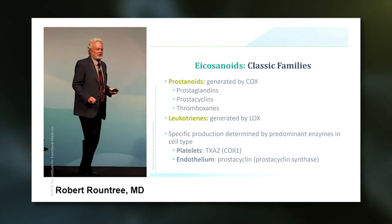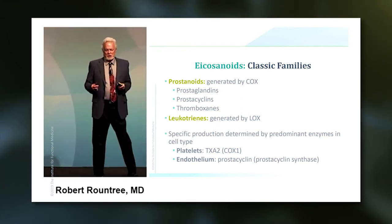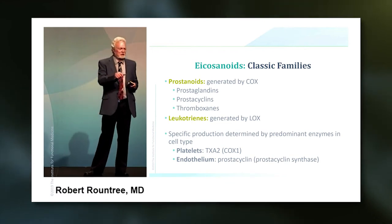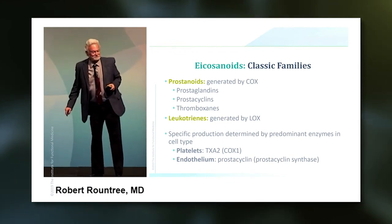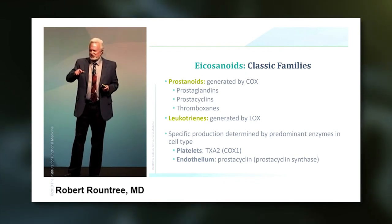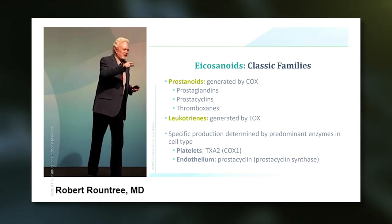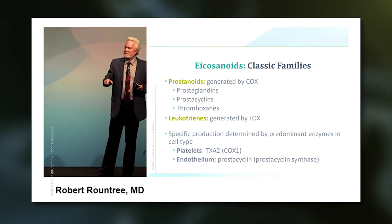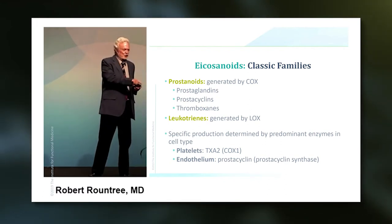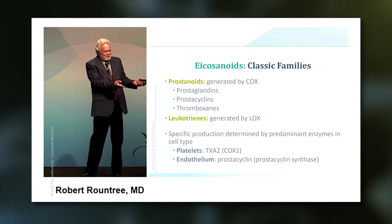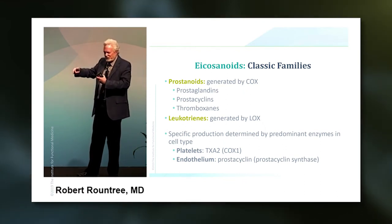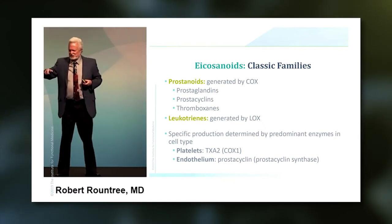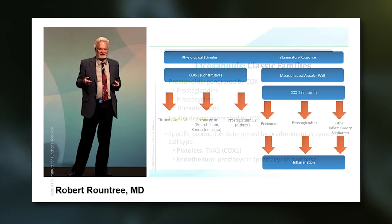There are two major groups of enzymes that produce eicosanoids: the COX enzyme producing prostanoids, and the LOX enzyme producing leukotrienes — and we've got drugs for both. Which eicosanoids you're going to make depends on the tissue. Platelets only have the COX-1 enzyme and are going to make an eicosanoid called thromboxane A2. Every cell has its own mix of those enzymes, and every cell has a slightly different output of eicosanoid. So every cell participates in this inflammatory process in a slightly different way.